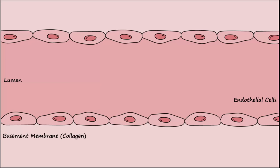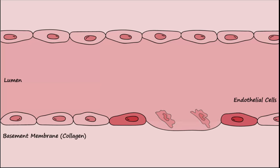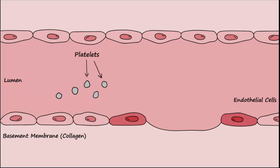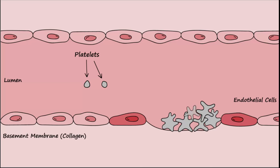Here's a normal blood vessel. Damage to the vessel wall begins the formation of the platelet plug. Platelets begin to attach to the underlying collagen in the damaged area, which in turn activates the platelets. Activated platelets have undergone a physical change in shape and are also able to attach to one another, forming a plug which helps stop bleeding.